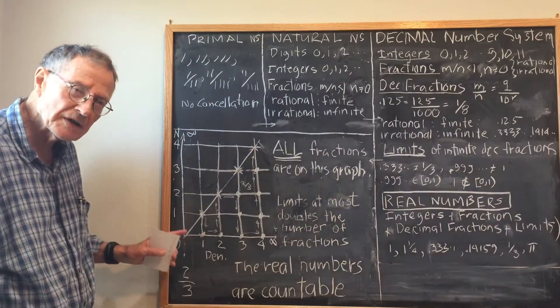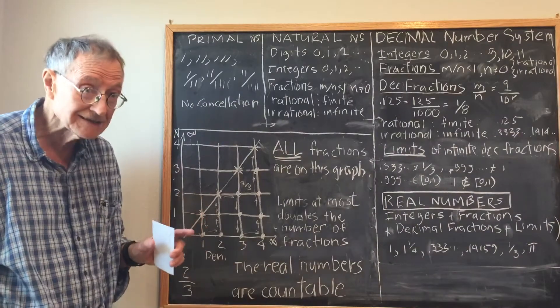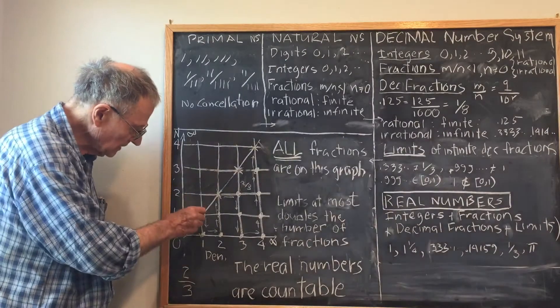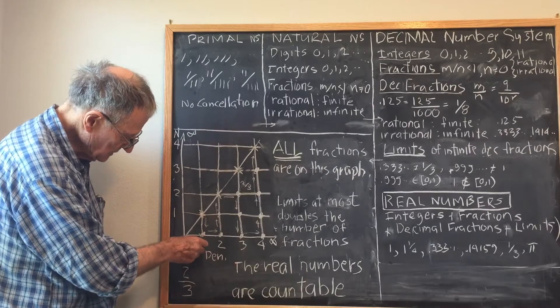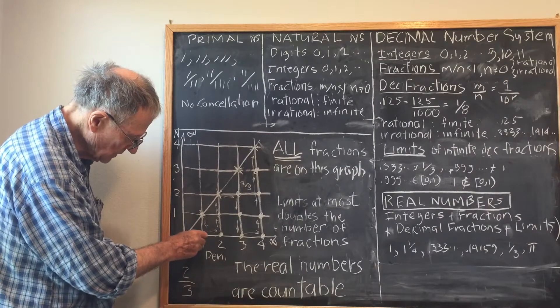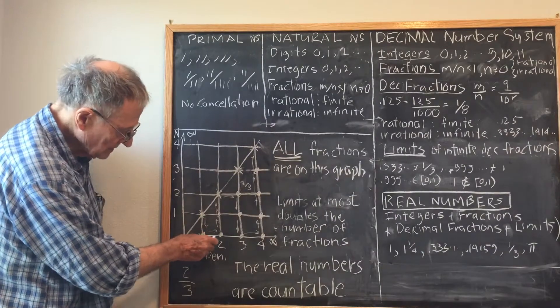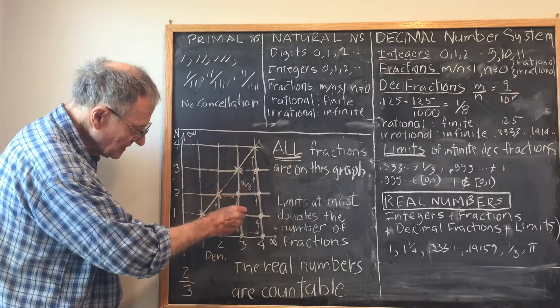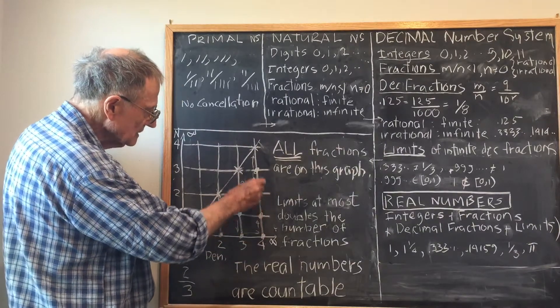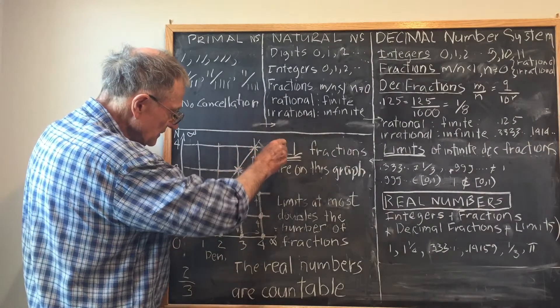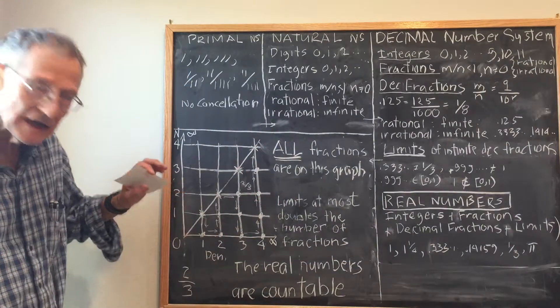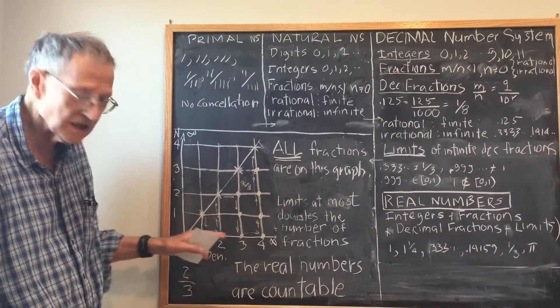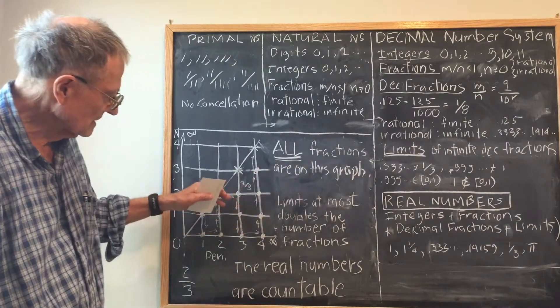The interesting part about this graph is that it enables you to count all fractions, all of them. I'll start in the following manner. If I start off at this point here and go to the point 1 down here, denominator 1, numerator 0, I'll count 1, 2, 3. I'll go to this point. I won't count it because its numerator and denominator equal 1. Go over here: 4, 5, 6, 7, 8, 9, 10. Won't count this one, so I'll go over here: 11, 12, and so on. So every fraction is on this graph, and you can count every fraction plotted on this graph. So all the fractions can be counted.